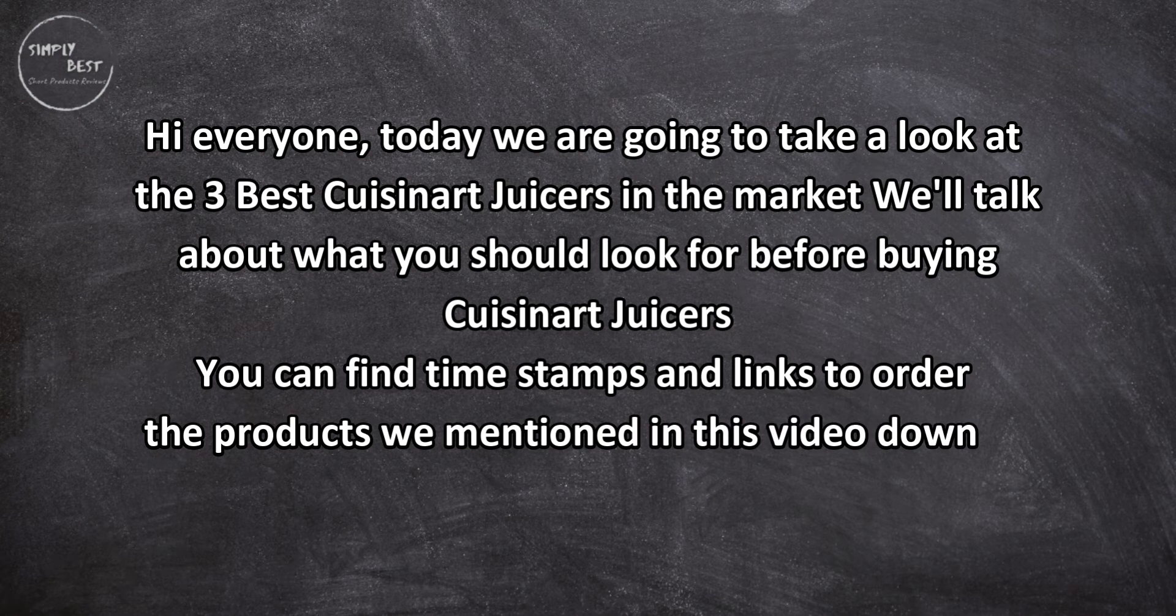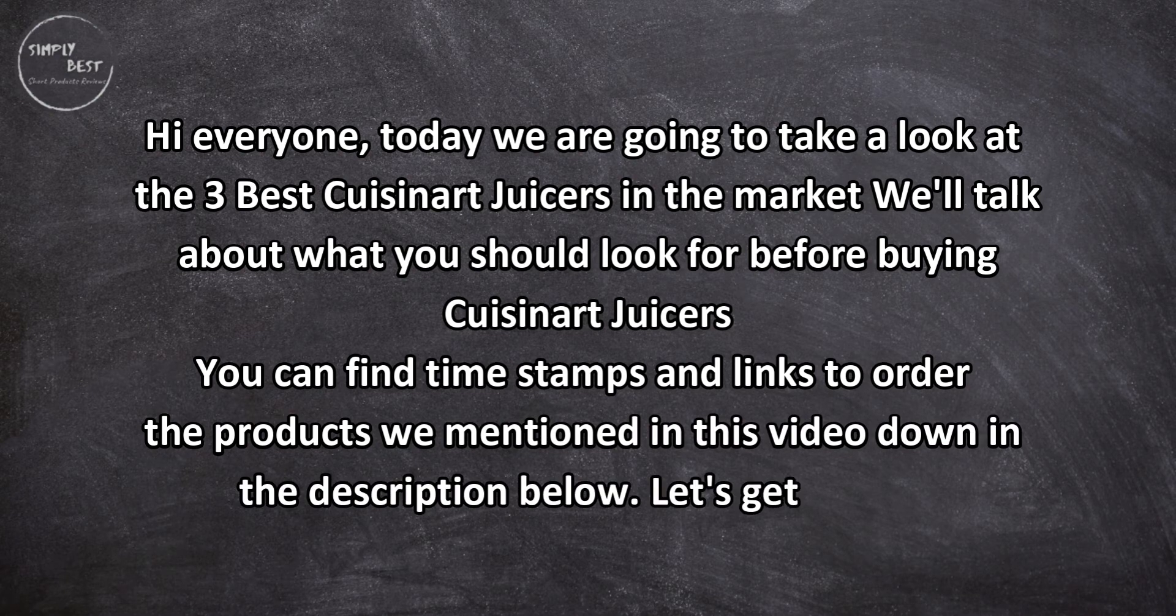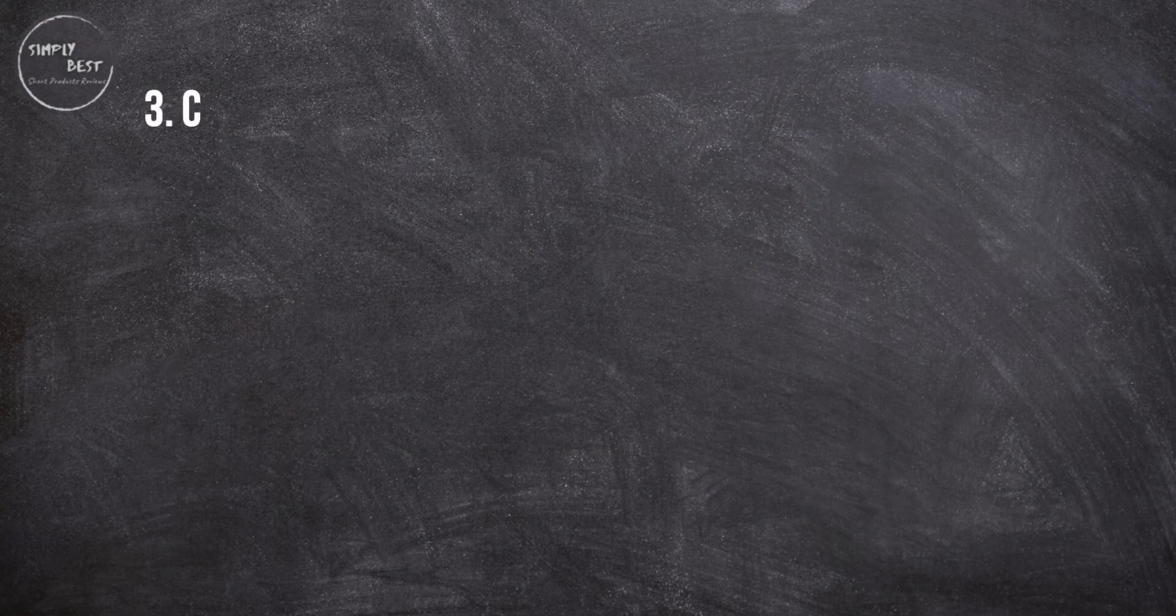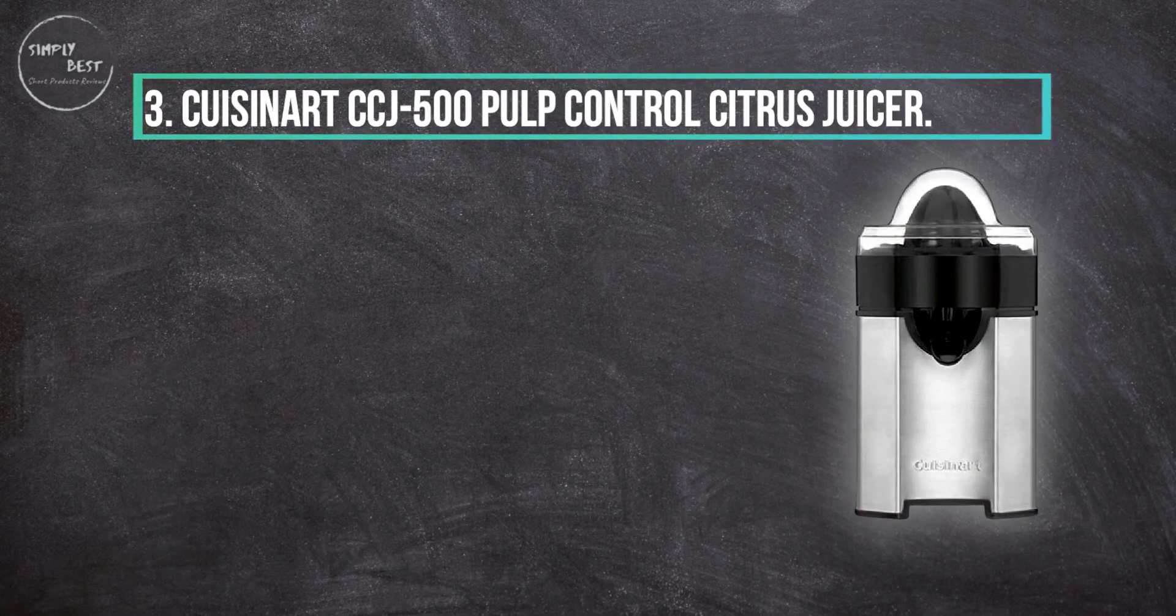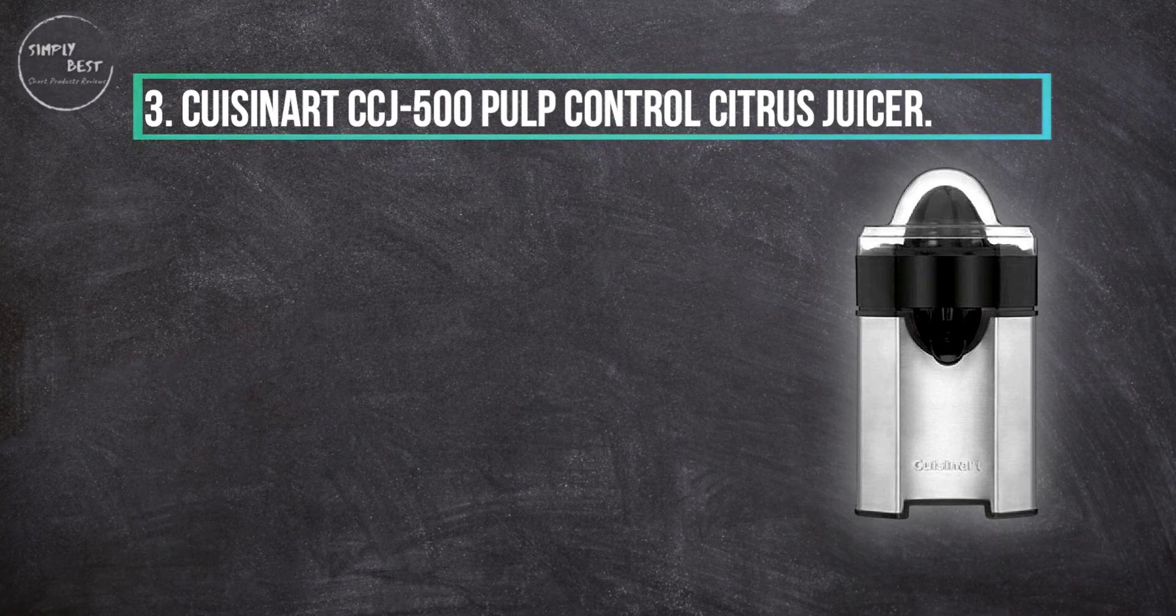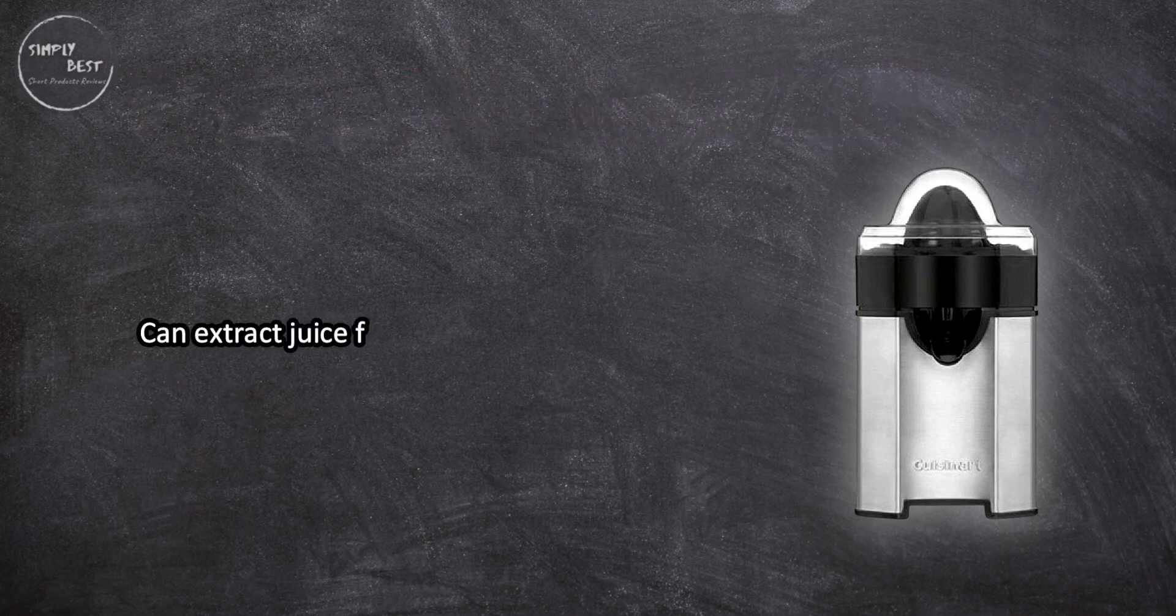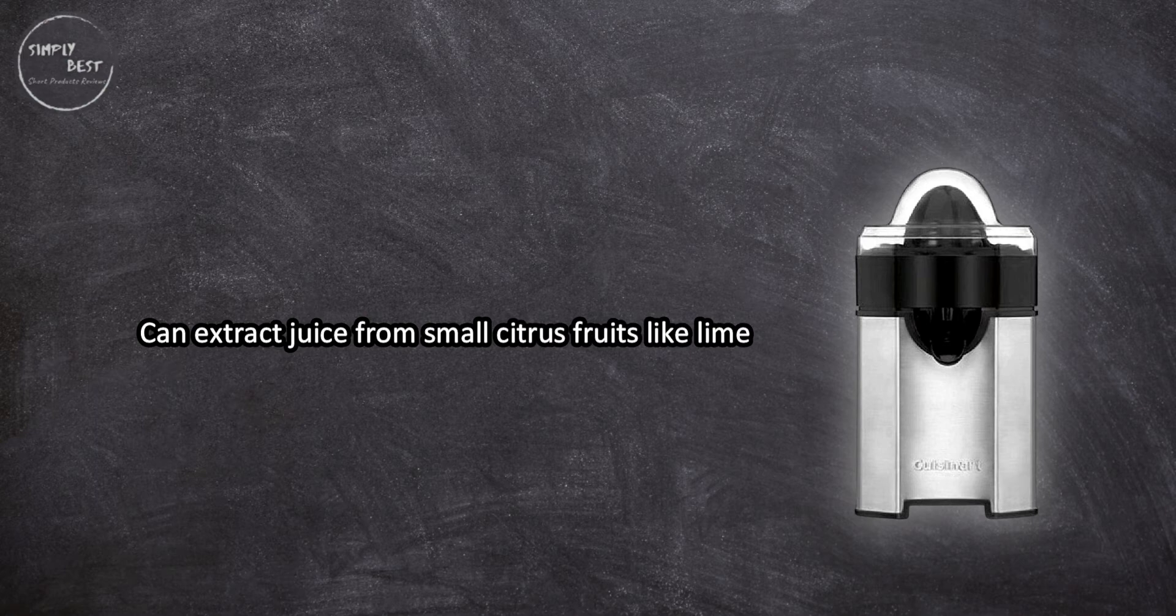Let's get started. At number three, Cuisinart CCJ-500 Pulp Control Citrus Juicer. Can extract juice from small citrus fruits like limes and lemons without pre-chopping. Oranges only need to be cut in half first. Final spin feature extracts more juice from pulp. Easy to clean.